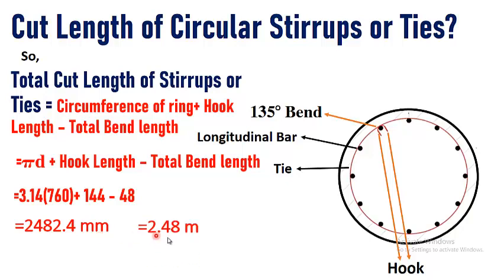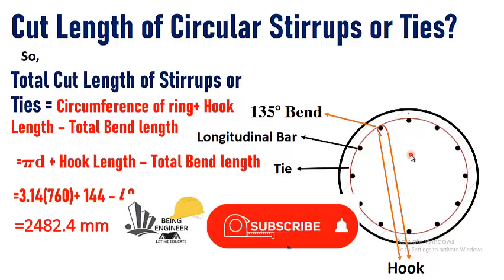The cut length comes out to be 2482.4 millimeters, which is equal to 2.48 meters. This means we require 2.48 meters of bar length to achieve the shape of this circular ring or tie. I hope you have understood the topic — please subscribe to the channel and press the bell icon to get video updates.